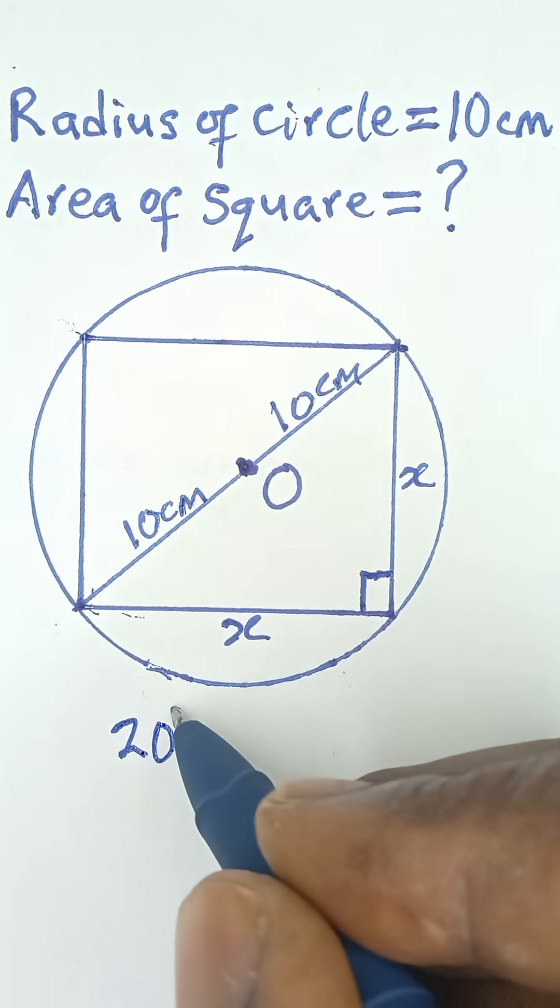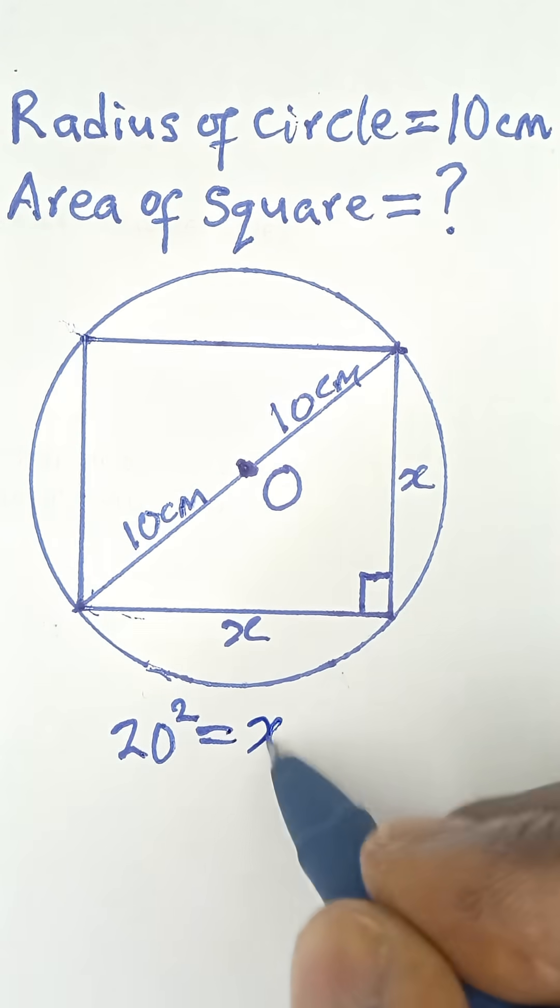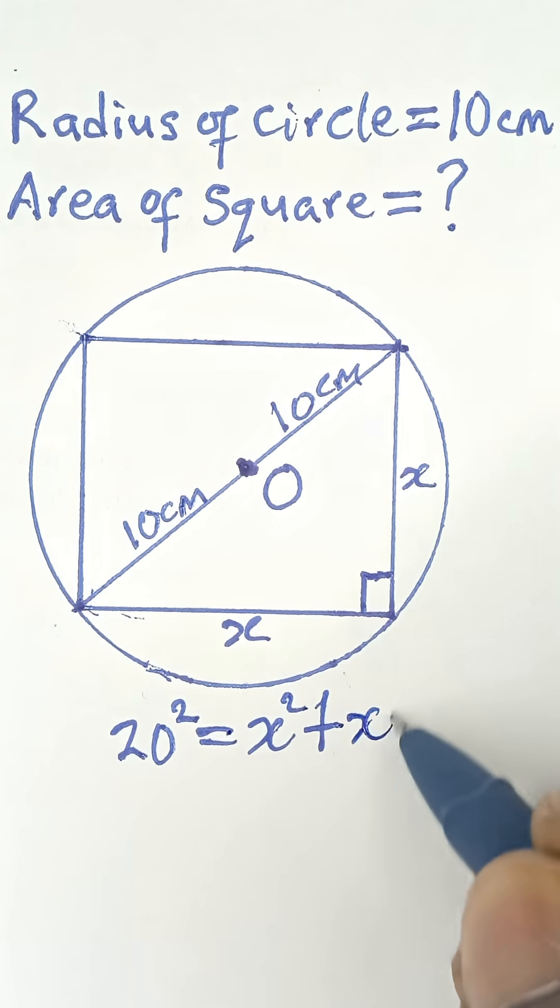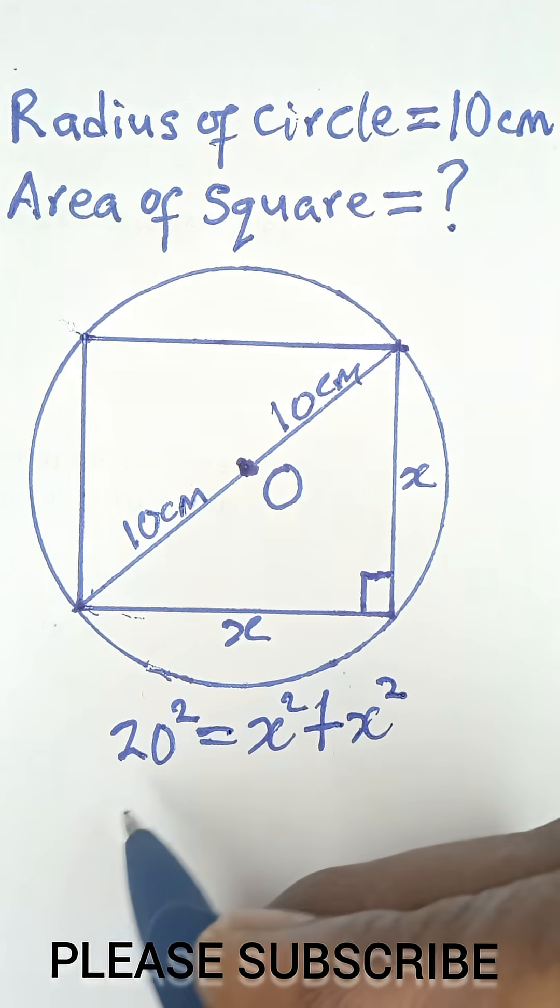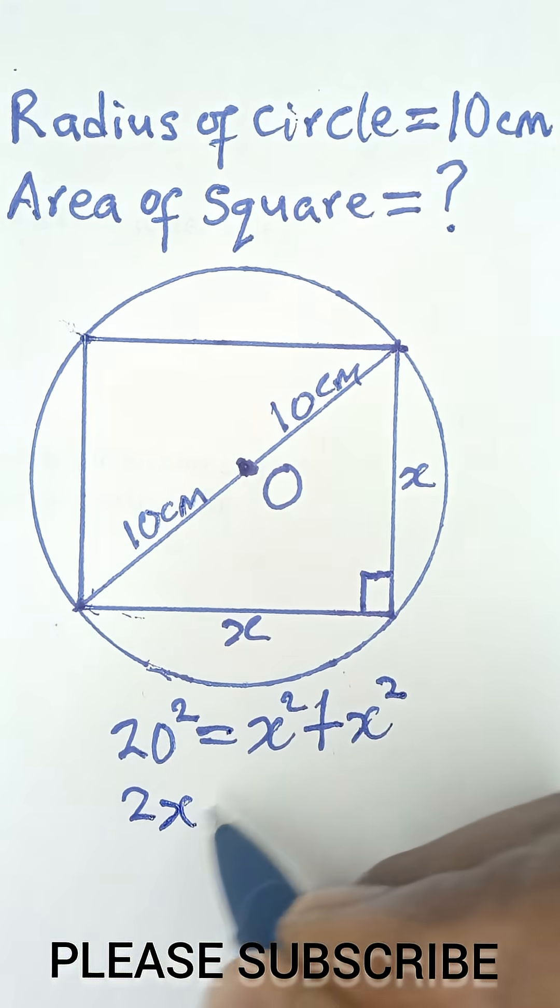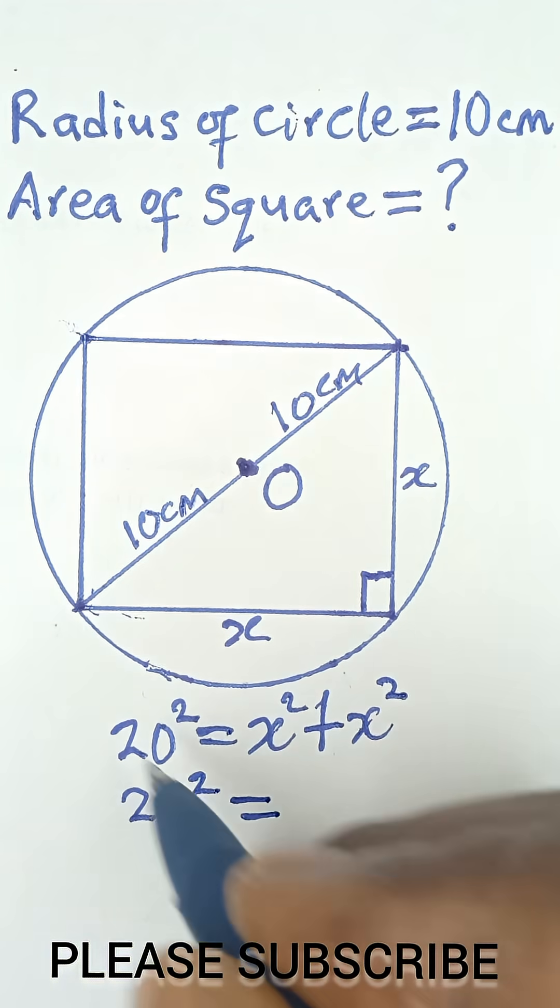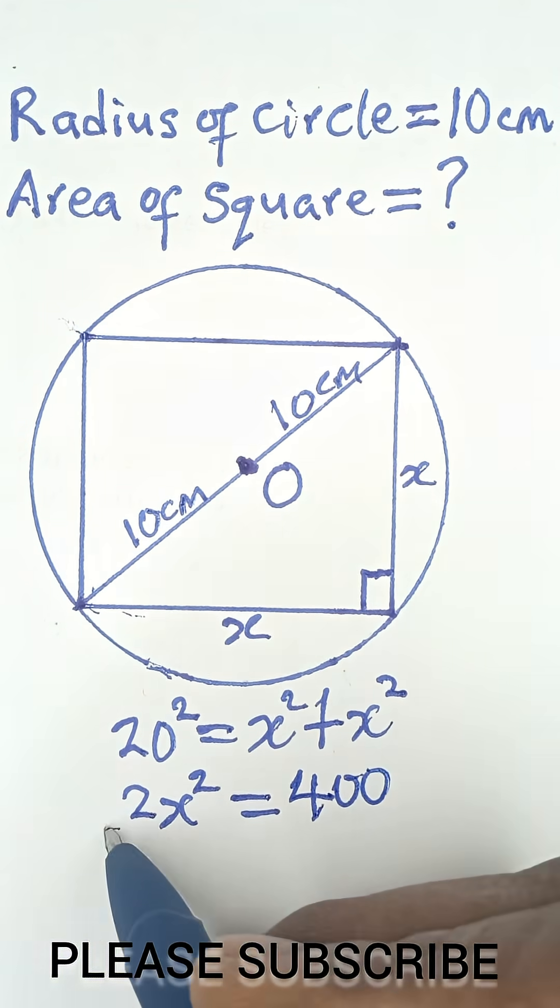So we say the hypotenuse square, which is 20 square, is equal to this side square, which is x square, plus this side square, which is also x square. So x square plus x square is 2x square. And that is equal to 20 square, which is 400.